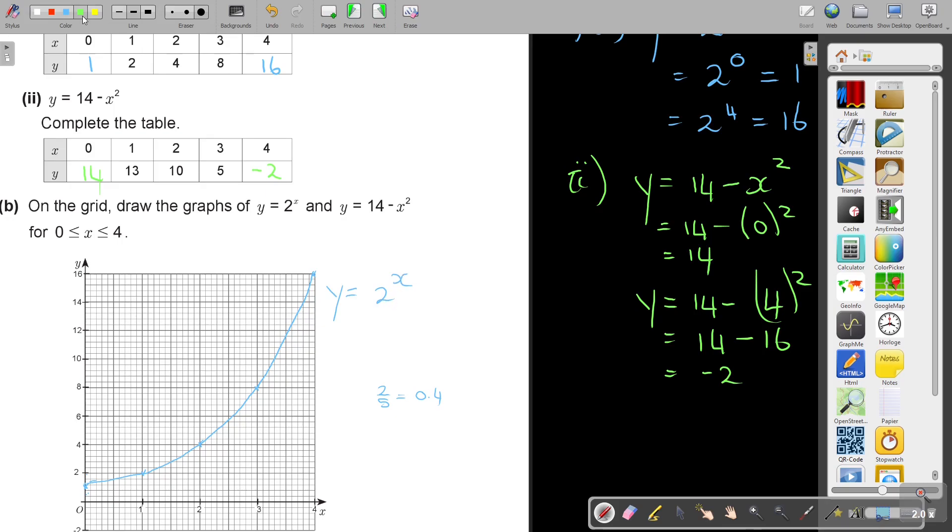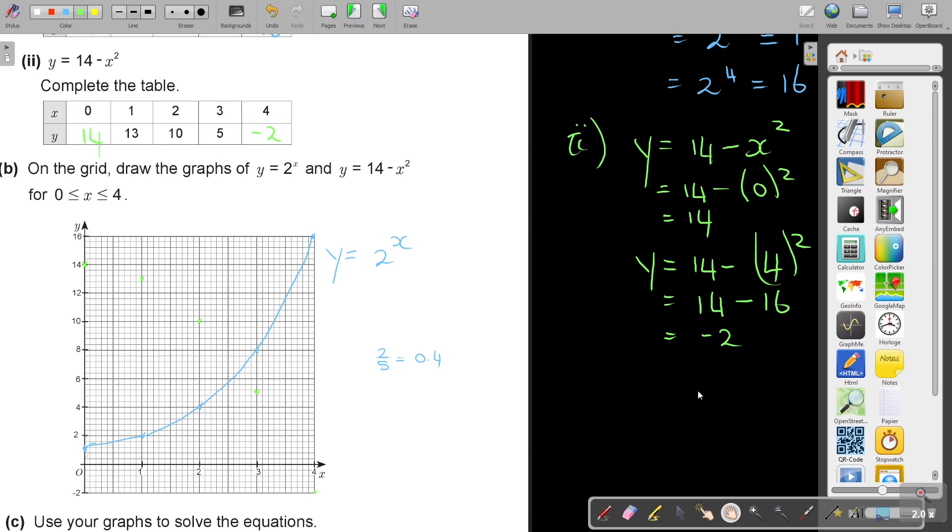And then the same in this one. So it's 0 and 14. It's 1 and 13, so it's going to be in the middle there. And then 2 and 10, it's going to be there. And then 3 and 5, it's going to be there. And then 4 and negative 2, it's going to be there. And I'm just going to move up a little bit and draw that curve. It's just almost like half of the curve. And that is going to be y equals 14 minus x squared.